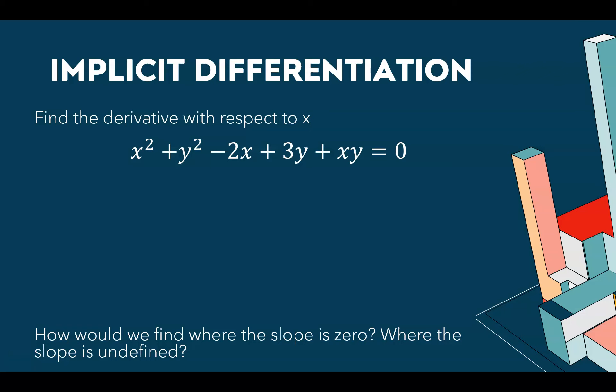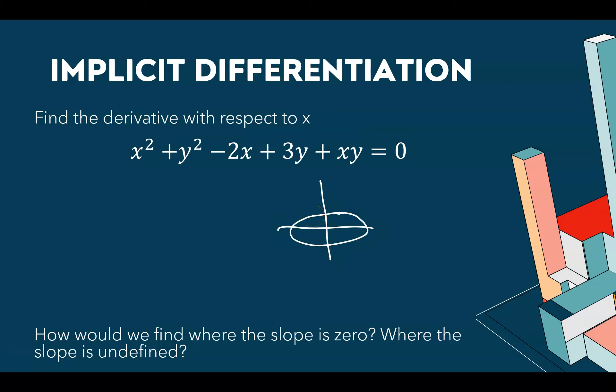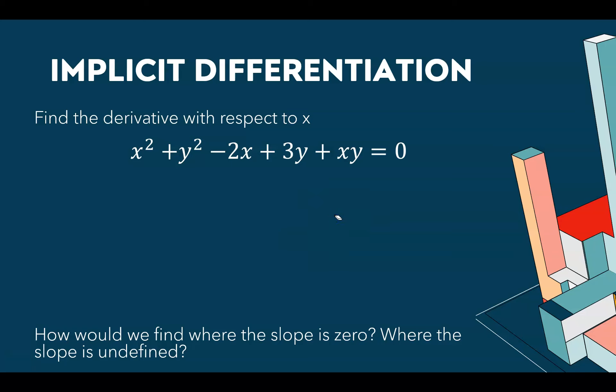For a more complex example — you might be thinking you do not want to rearrange and solve for y, especially because of the xy term. This is an oblique ellipse; that xy term gives some rotation rather than a nice upright ellipse. Our job is to find the derivative with respect to x, so let's go term by term.